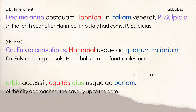I always found this part of the story interesting because there's really not a need to put both timing references. If you're saying it's in the 10th year after Hannibal had come to Italy, we already know basically what year it is. But I think it kind of highlights the idea that Hannibal has been in Italy for a very long time. As you read Eutropius' narrative, you can lose that fact because he's been condensing so many events into short little chapters.